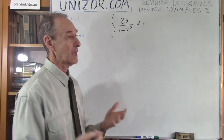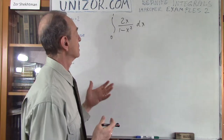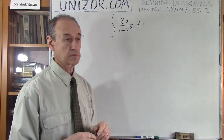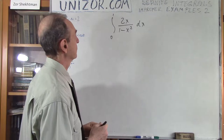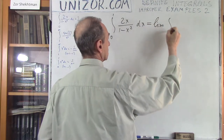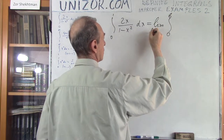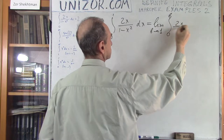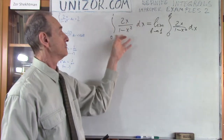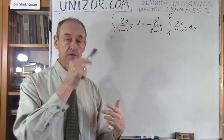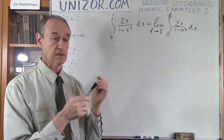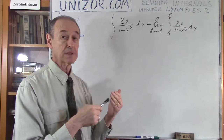How can we deal with this particular integral, considering we have this infinity? The function goes to infinity right near the margin — it asymptotically goes to infinity. We have to convert it into a limit, because this is the definition of an improper integral. There are no Riemann sums if the function goes to infinity on this segment.